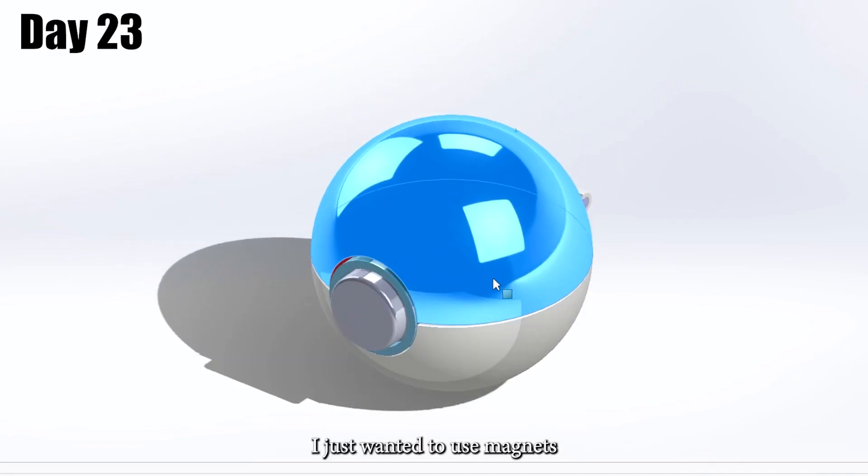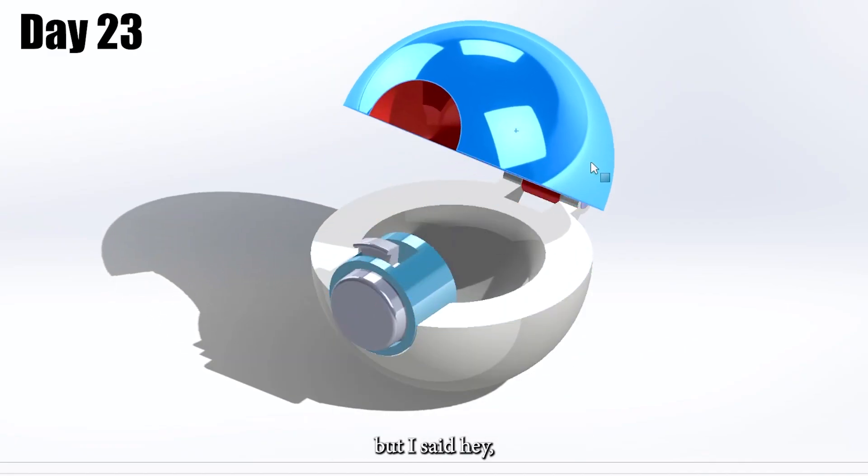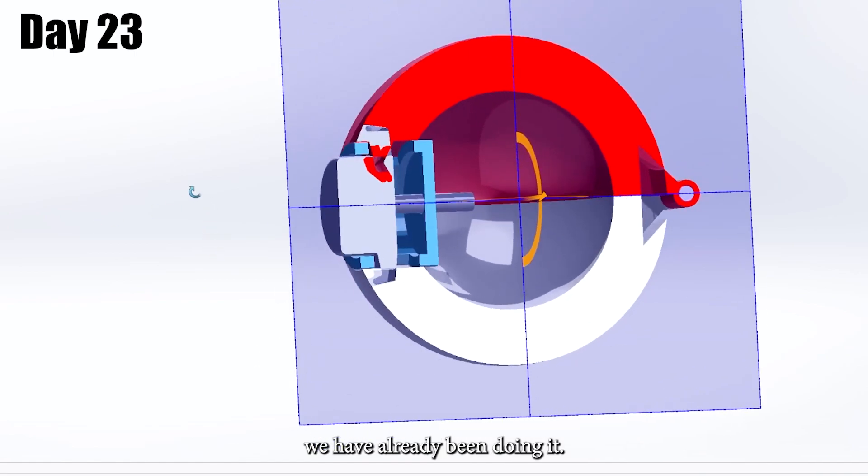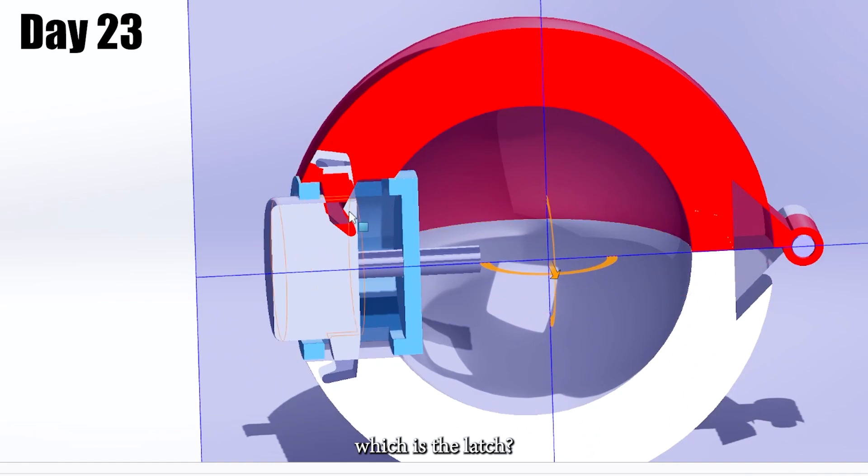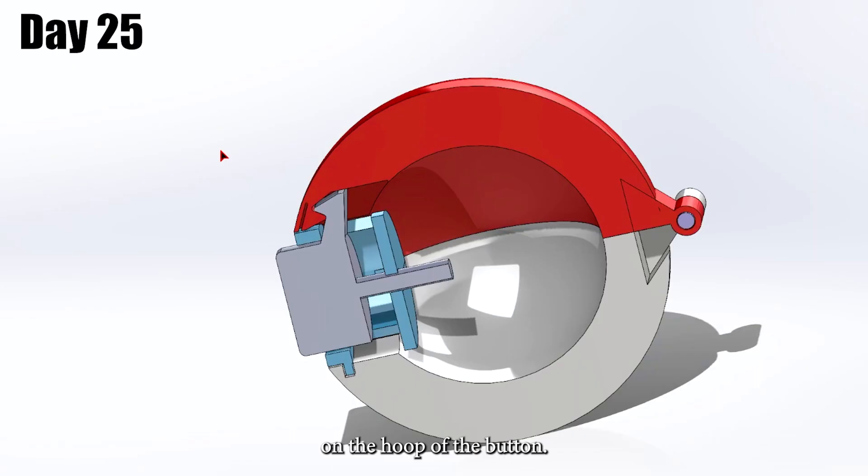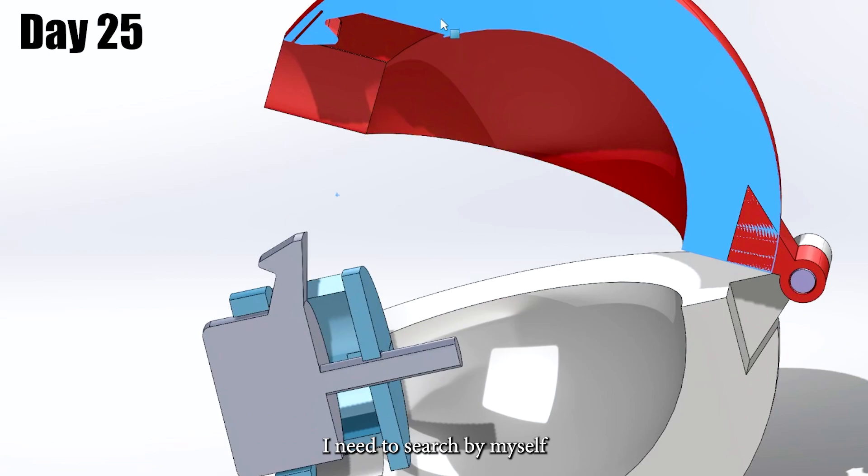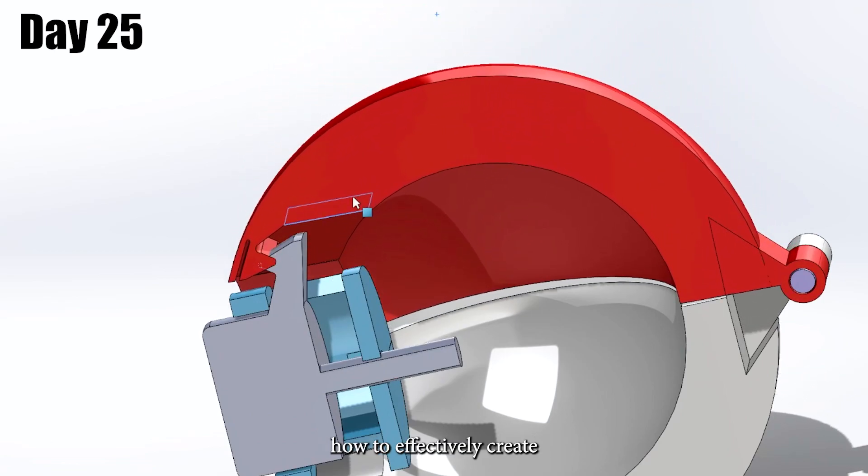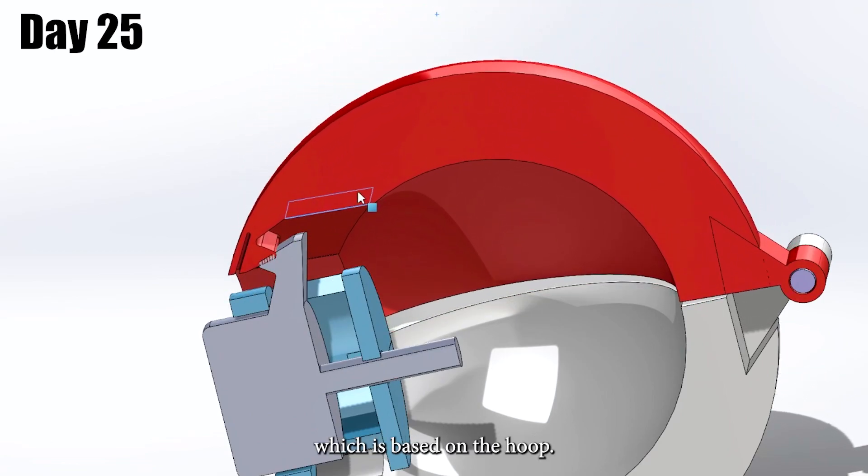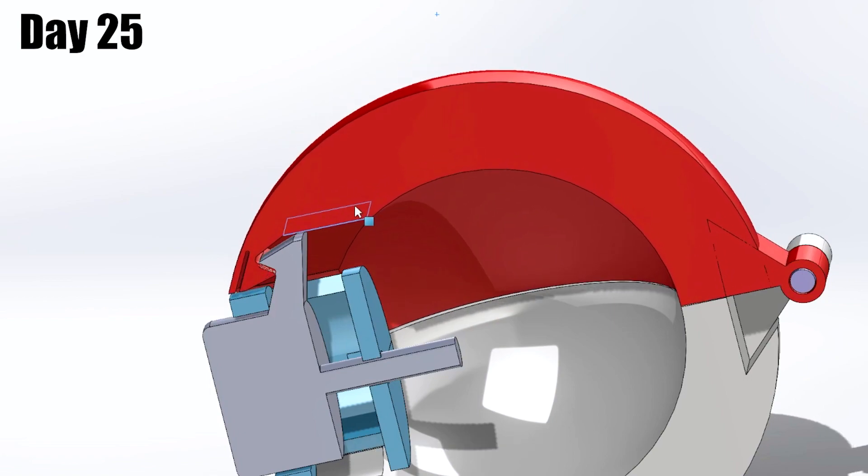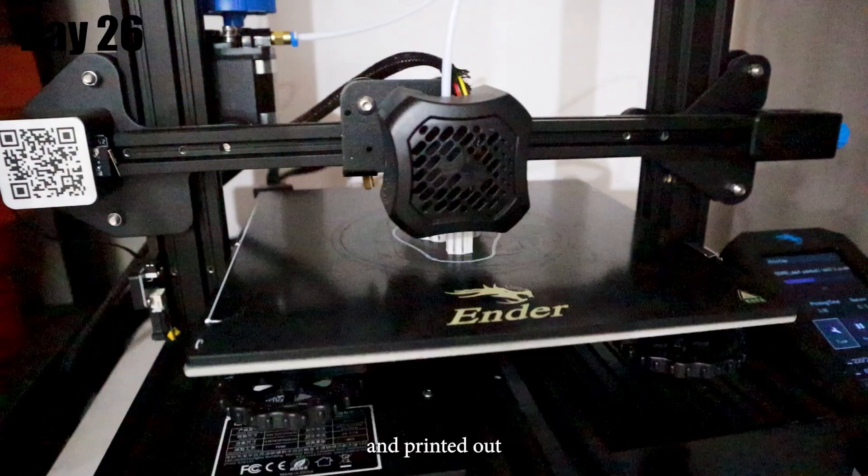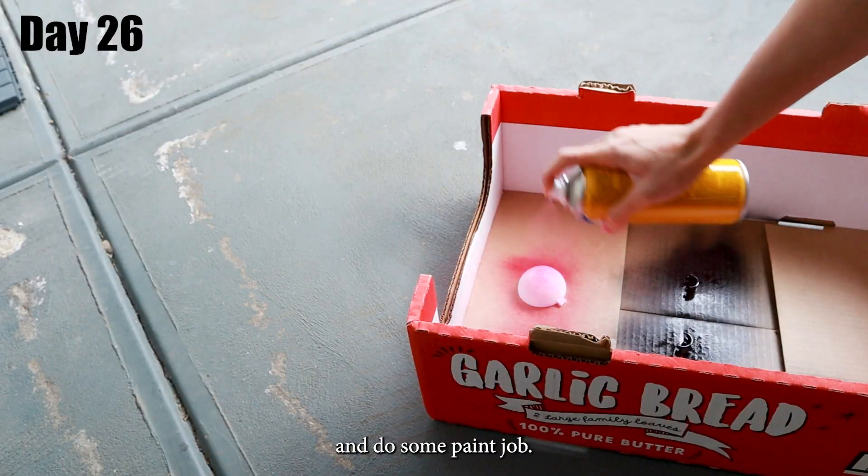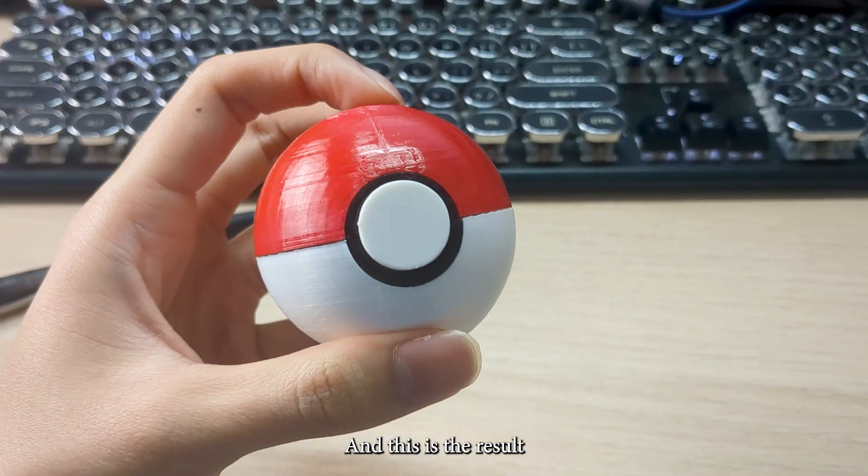Initially I just want to use magnets to open and close but I said, hey we have already been doing it, why not just do the more difficult one which is the latch. The latch is going to be based on the hook of the button. I need to search by myself how to effectively create the cavity which is based on the hook. So yeah, after I'm satisfied with my design, I put it in my 3D printer and print it out and do some paint job. And this is the result.